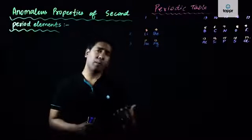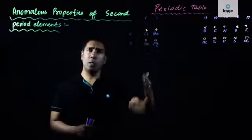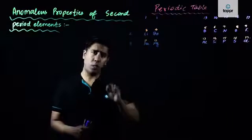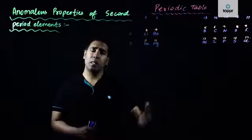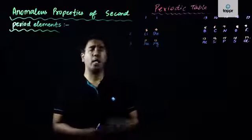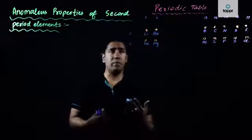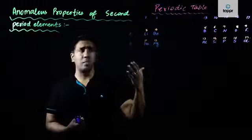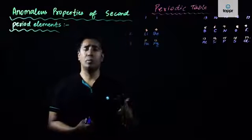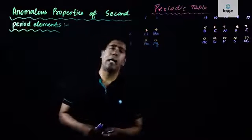The fundamental principle of periodicity of elements is that all elements present in a particular group should have the same physical and chemical properties. However, this rule is broken by lithium in the case of alkali metals, by beryllium in the case of alkaline earth metals, and to some extent by boron, carbon, nitrogen, and oxygen as well. So if lithium's properties are different from sodium's, to which element's properties does lithium's properties coincide with? It has been found that there is something called a diagonal relationship.